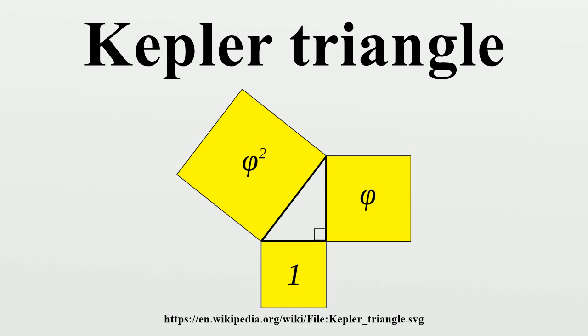According to some sources, Kepler triangles appear in the design of Egyptian pyramids. However, the ancient Egyptians probably did not know the mathematical coincidence involving the number π and the golden ratio.